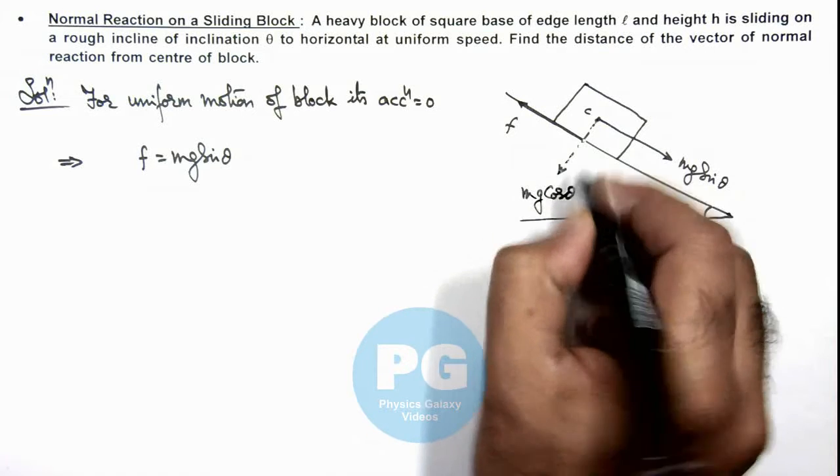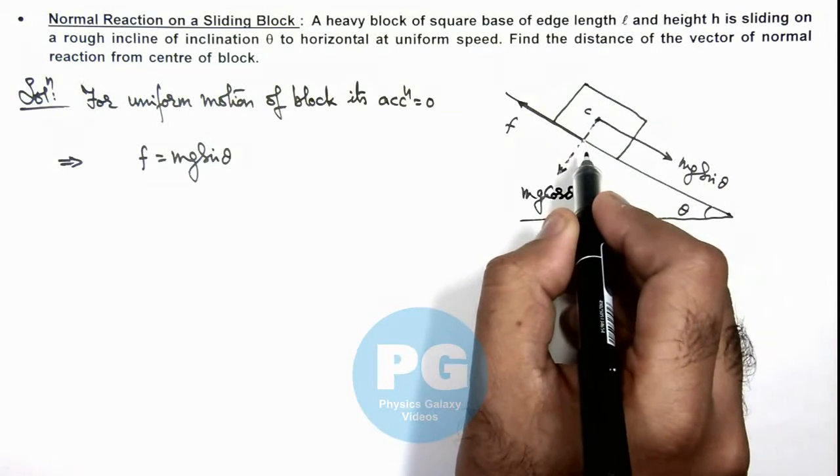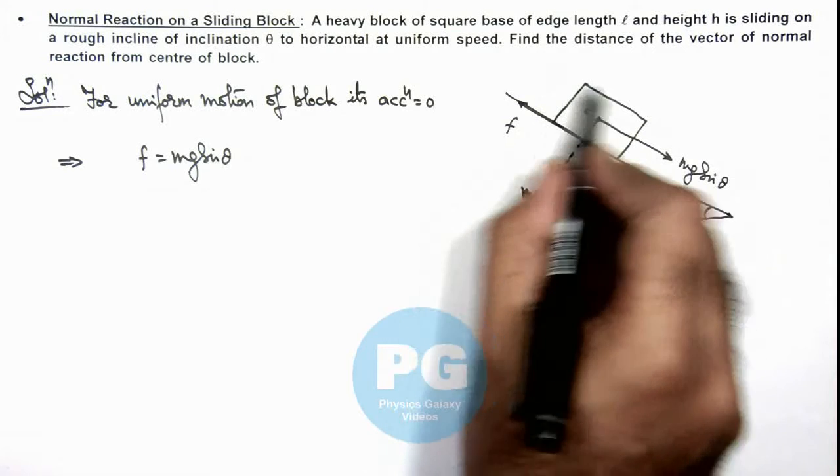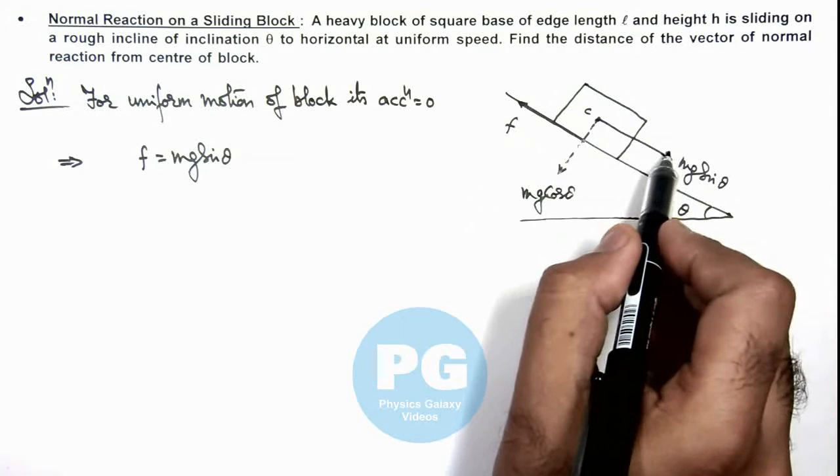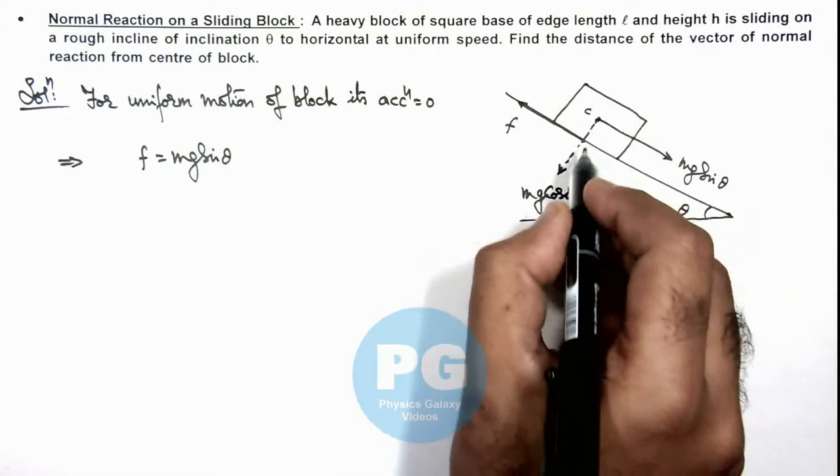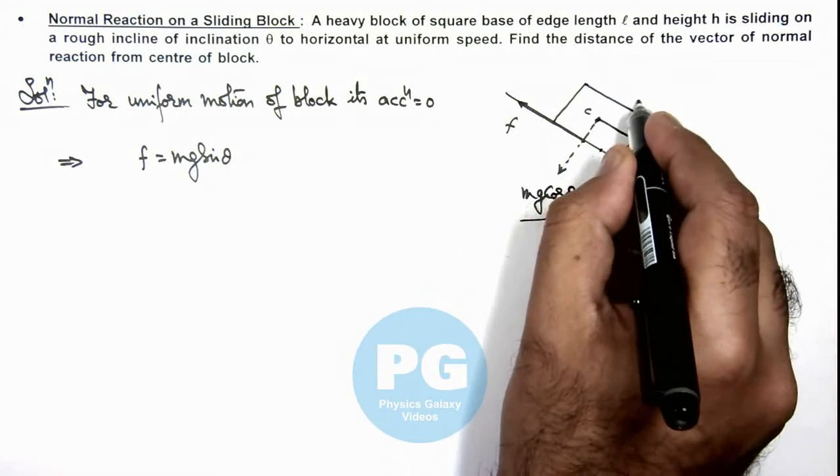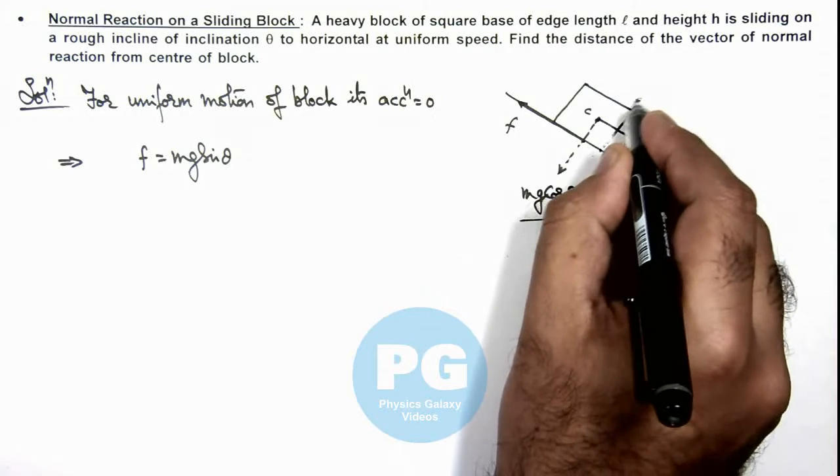And this friction will impart a clockwise torque onto this block. And due to this clockwise torque the block must rotate. And as it is sliding only and it is not rotating, that means the normal reaction would be acting somewhere in the front half of this block rather than passing through center.